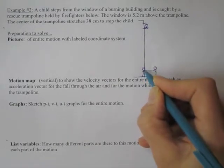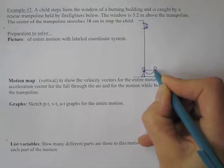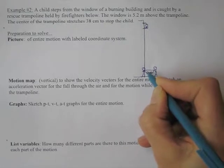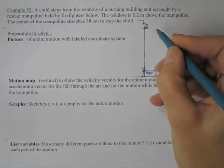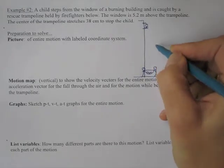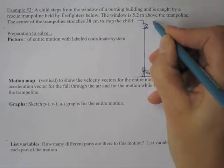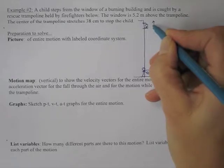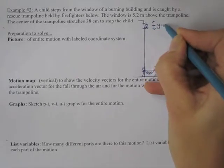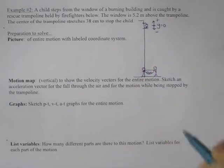It's going to sink down when the child lands in it a certain distance. So my coordinate system, this is the y direction, so I would use a y coordinate system and I'm going to put y equals zero at the starting position of the child.